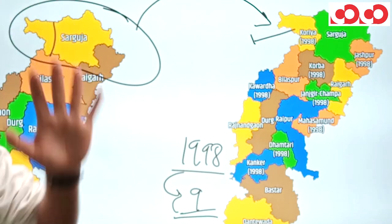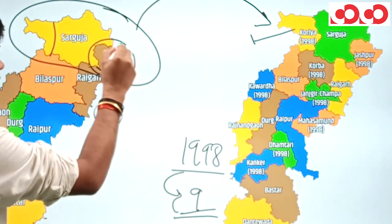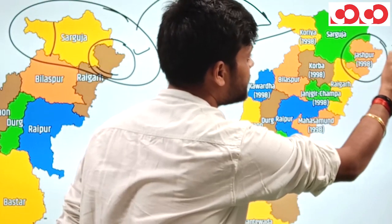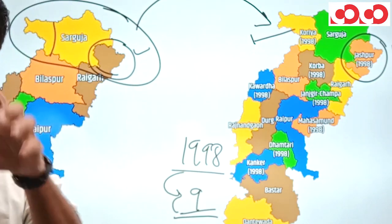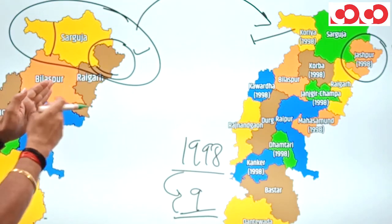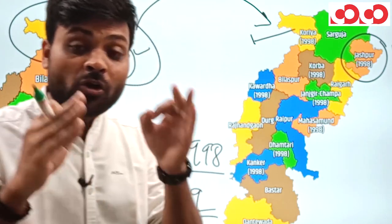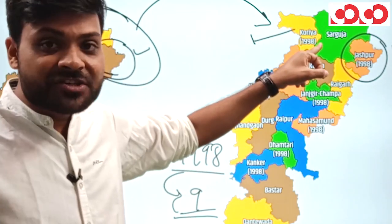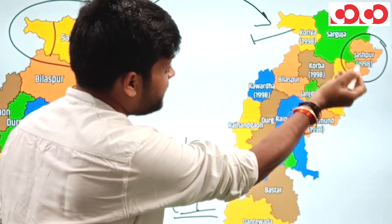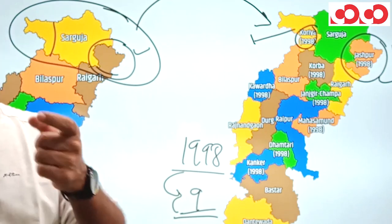Also in the present-day Surguja division, a part of Raigarh district was dissociated and became a separate district named Jashpur — this was the area of the Jashpur princely estate. So two new districts were formed in Surguja division in 1998: Korea and Jashpur, at the two extremities of the division.